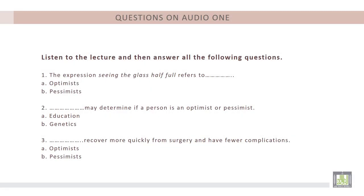Review question one: the expression 'seeing the glass half-full' refers to optimists or pessimists? The correct answer is optimists. Question two: what may determine if a person is an optimist or pessimist — education or genetics? According to the lecturer, genetics may determine this, so the correct answer is B. Question three: who recovers more quickly from surgery and has fewer complications? The correct answer is optimists.